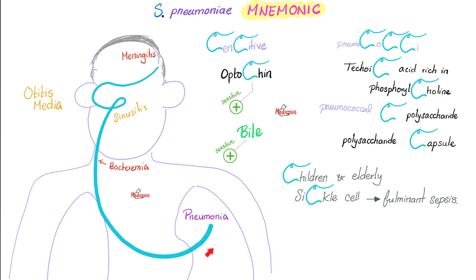What diseases can you cause? Just draw a big C across your body: meningitis, otitis, sinusitis, bacteremia, and pneumonia. If you are a child, very old, or have sickle cell disease, you are at risk of severe pneumococcal infection and fulminant sepsis.